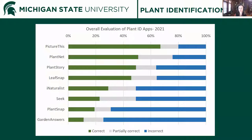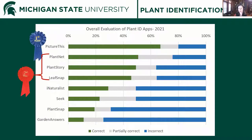The results ranked apps by percent accuracy. The most accurate app we tested in 2021 was PictureThis, with close to 70% of its answers labeled as correct — increasing to 80% when including partially correct answers. That was followed by a cluster of apps — PlantNet, PlantStory, and LeafSnap — all around the 50% accuracy range, varying a bit when partially correct answers were included.